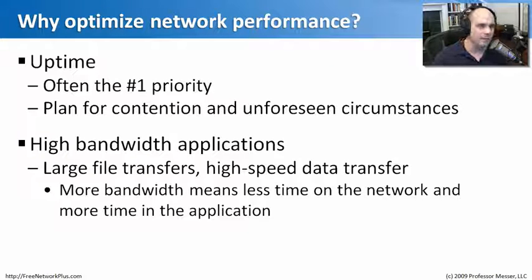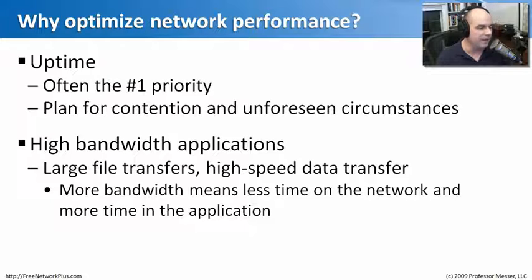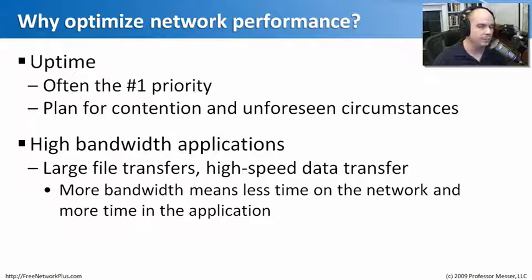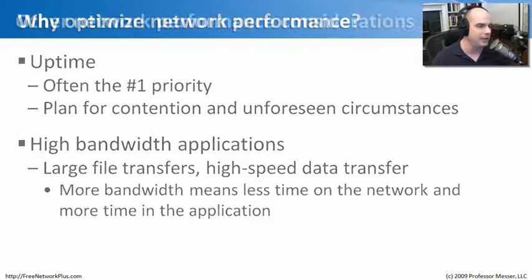Another key reason for optimizing your network is if you need to add a new application that uses a lot of bandwidth. Many new applications use a lot of bandwidth. If an application does a lot of file transfers, high speed data transfers to third parties, or a third party needs to drop data into your network, you want your network running as efficiently as possible so those transfers spend as little time on the network as possible.